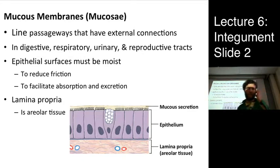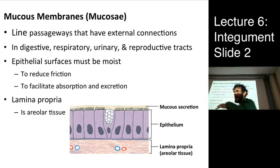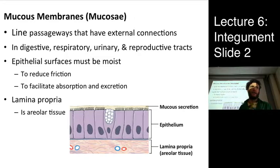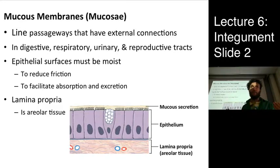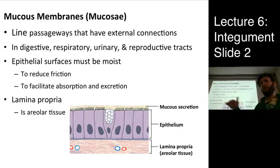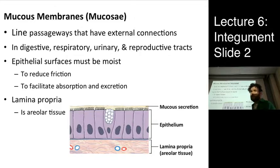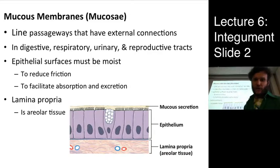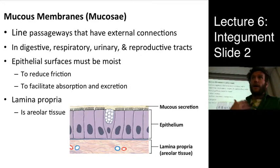First, mucous membranes. These line passageways that are open to the external world. The world is a pretty dry, harsh place, and any epithelium must be moist for the chemical processes that happen at that apical membrane surface. So mucous membranes — these epithelial layers exposed to the outside world — must lubricate themselves and remain moist. We find these in the digestive system throughout the entire gut tube, in the respiratory tract through the trachea and bronchioles, the urinary tract, and the reproductive tract.